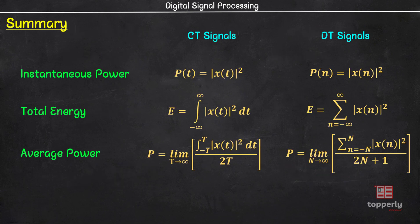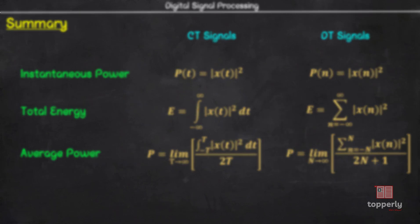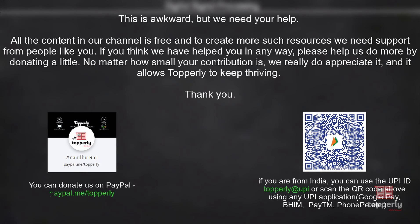So to summarize the lecture, we learned the equations for instantaneous power, total energy, and average power for both continuous time signals and discrete time signals. I hope that all the concepts that were taught in this video are clear to all of you.